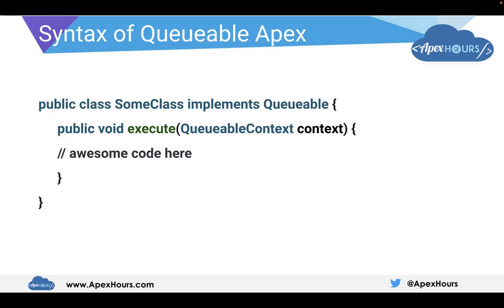This is the basic syntax of Queueable Apex. Queueable Apex is nothing but a normal Apex class which implements the Queueable interface. It has only one method, which is execute, and it accepts one parameter, which is QueueableContext.